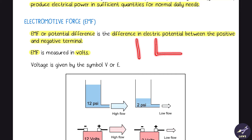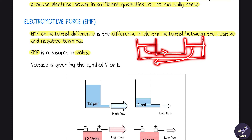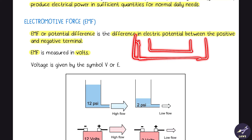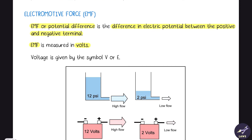To give another example: imagine a water container connected to another container. If both are maintained at the same level, there will be no flow between them. But if we increase the level in one container and keep the other really low, water flows from high to low. The same idea applies to potential difference — the difference in potential makes electrons flow. This is basically electromotive force: the force that actually moves the electrons. EMF is measured in volts.